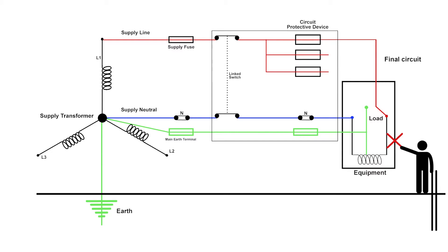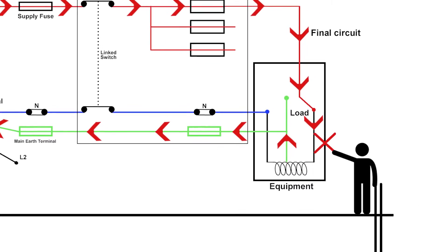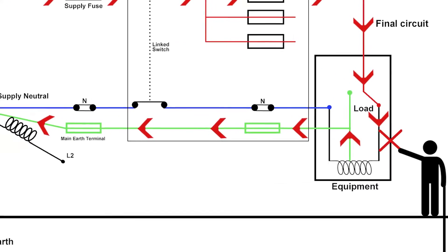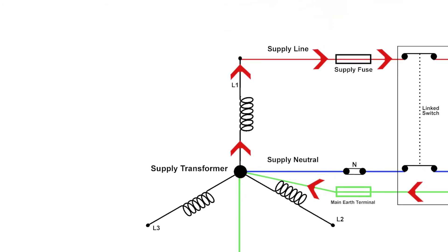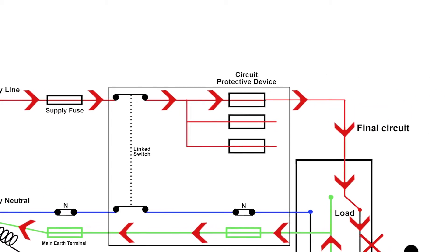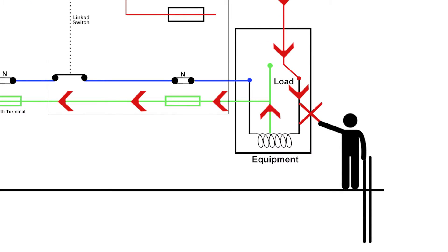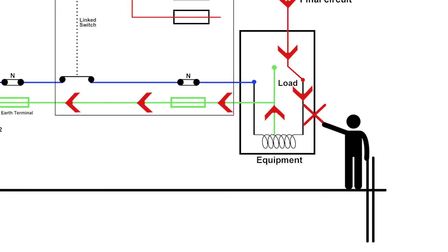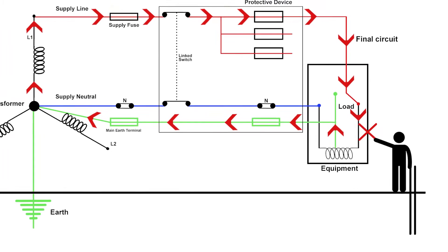You can see that in the event of a fault, the current's going to flow through the case of the machine to wherever our earth is connected to, then through our earthing system back to the star point of the transformer and it forms what we call an earth fault loop. In other words, for us as electricians, we'd call that our ZS. And we need to know that the value of that ZS is low enough to operate that protective device.